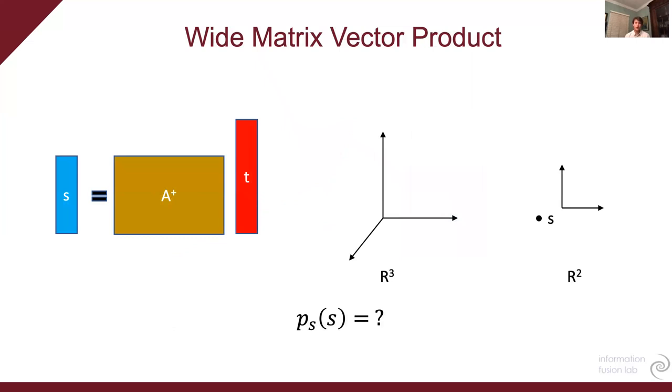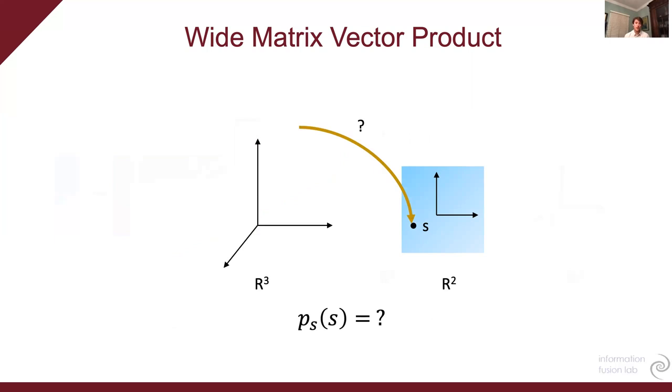Now, if you consider the inverse problem where we have a low dimensional vector S and we assume that it was generated from a wide matrix vector product and we want to find the density of S, it's also not straightforward. The first step to figuring out what the density of S is, we have to find what possible vectors can map to it. A simple solution is just AS. We can go to a vector T equals AS and back from T to S using the wide matrix vector product with the pseudo inverse of A and back with the regular matrix vector product with A.